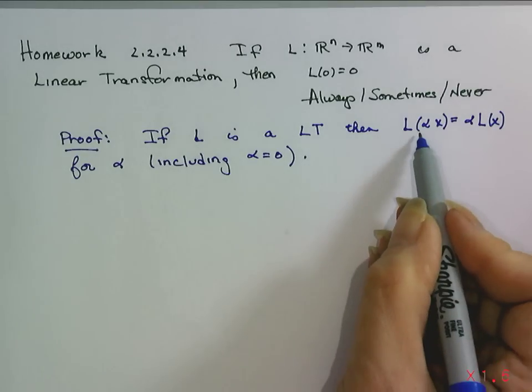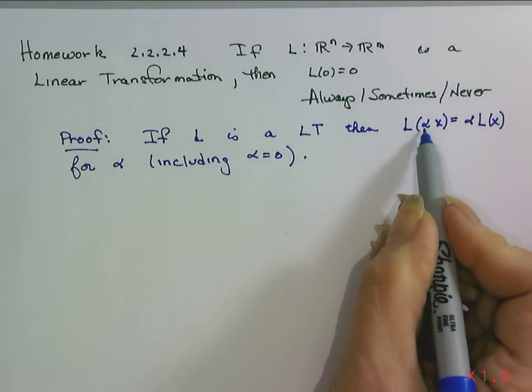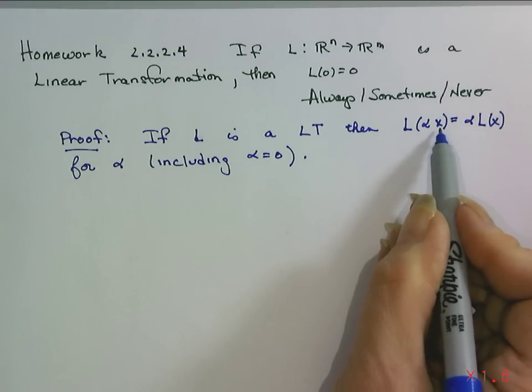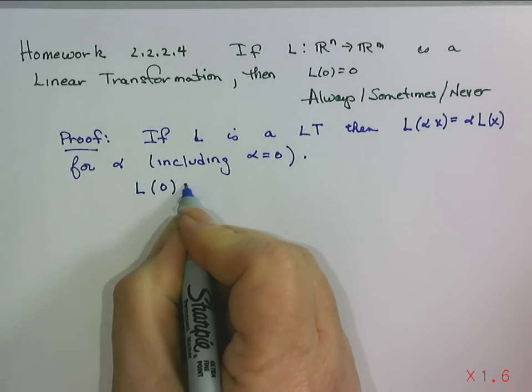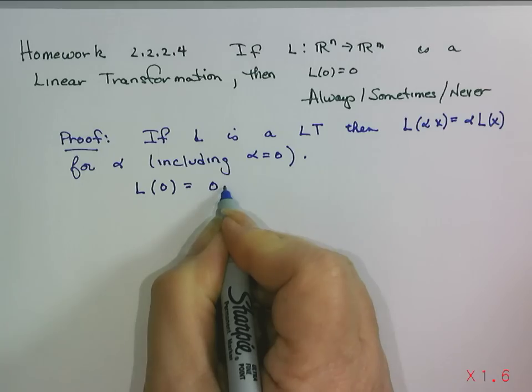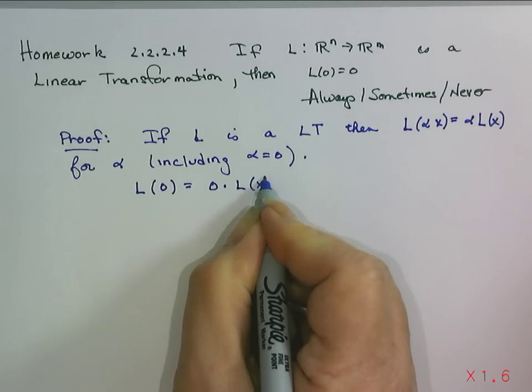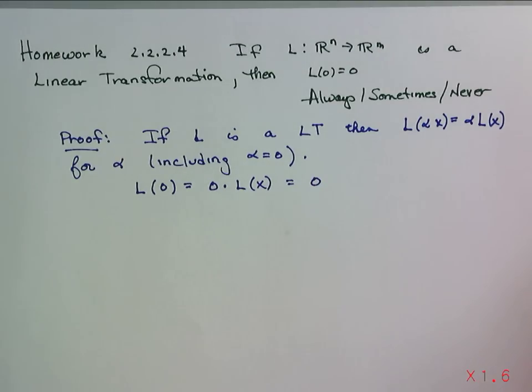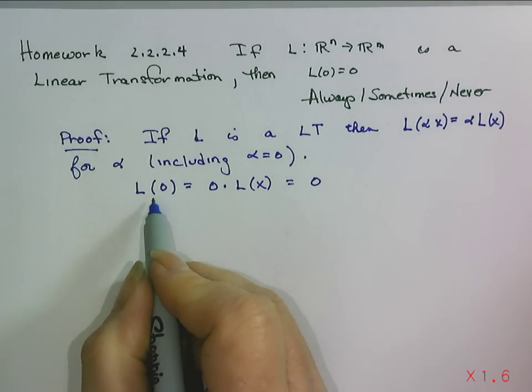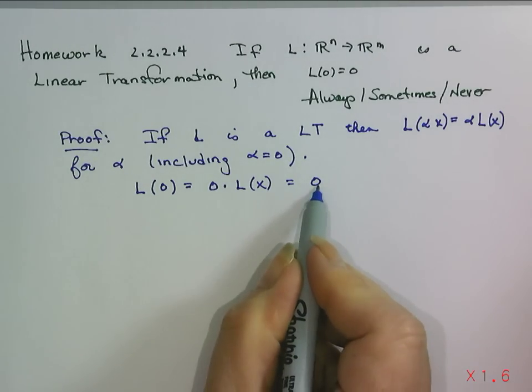Well, if alpha is equal to 0, 0 times any vector gives us a 0 vector by scalar multiplication. So that means L of 0 has to be 0 times L of x, which is just the 0 vector. And so, it must be the case that L of 0 is 0.